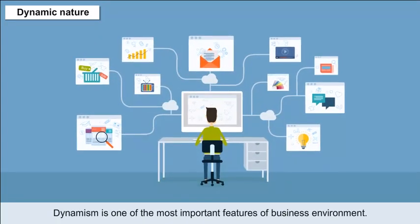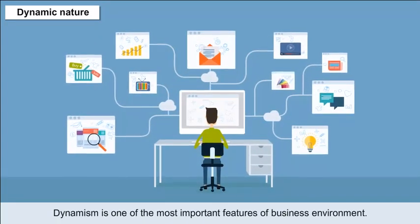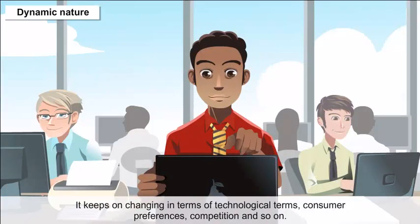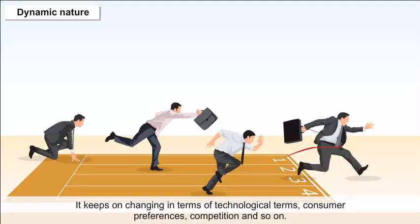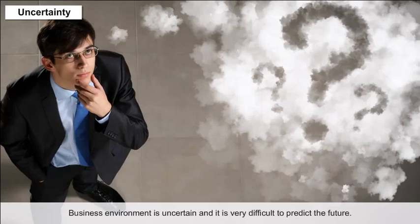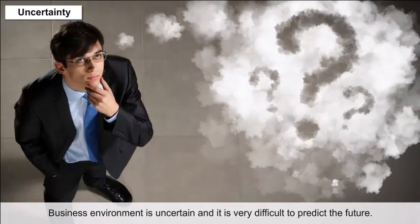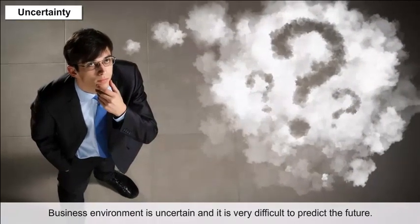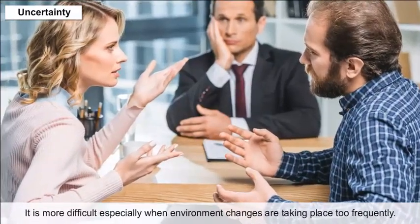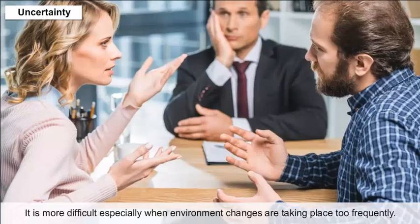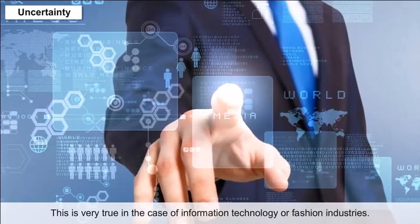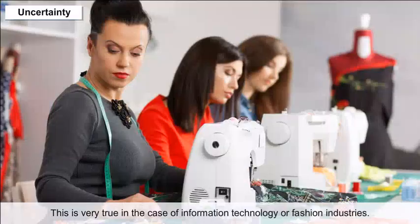Dynamic Nature: Dynamism is one of the most important features of business environment. It keeps on changing in terms of technological advancement, consumer preferences, competition and so on. Uncertainty: Business Environment is uncertain and it is very difficult to predict the future. This is especially true when environment changes are taking place too frequently, as in the case of information technology or fashion industries.